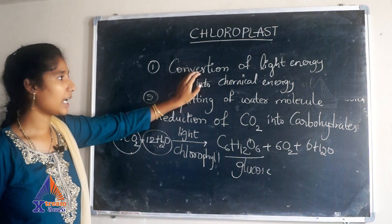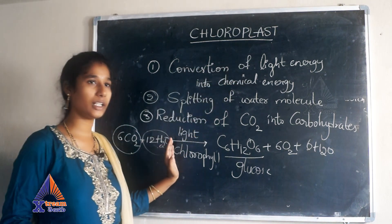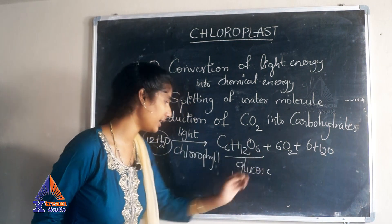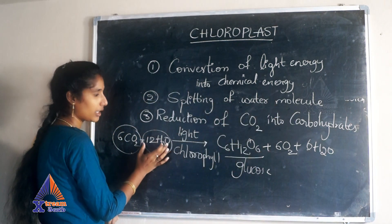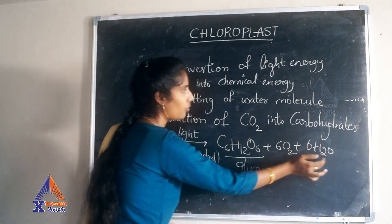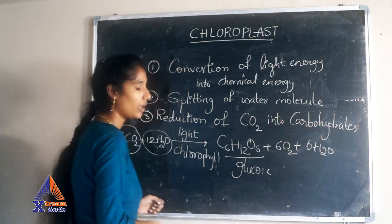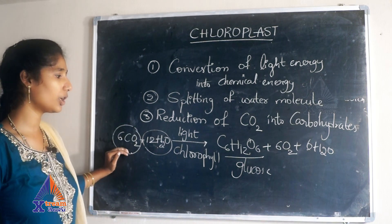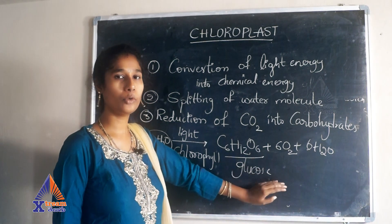The conversion of light energy into chemical energy: it utilizes light and converts it into chemical energy. Next, splitting of water molecules: the water molecule splits to form oxygen and water. Reduction of carbon dioxide into carbohydrates: the carbon dioxide undergoes reduction and forms glucose.